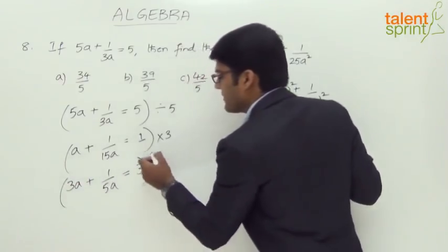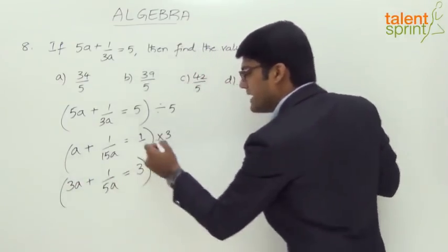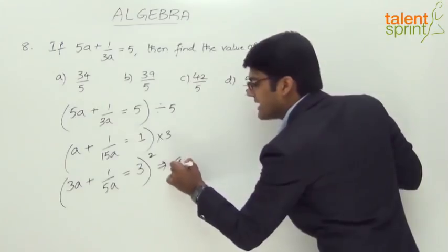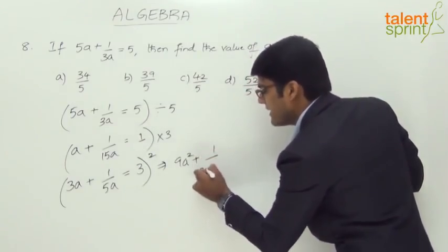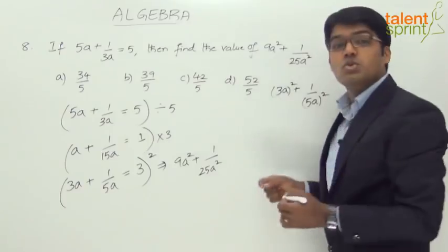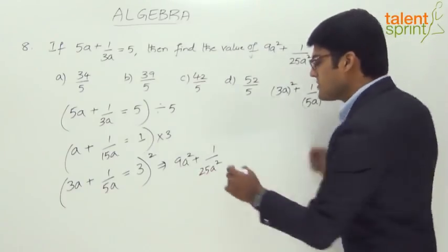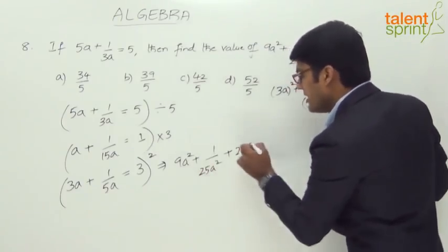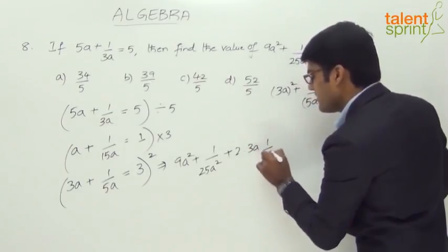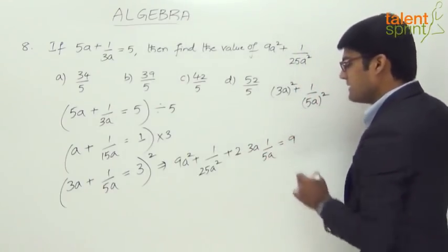So squaring on both the sides, whole square. So what do we get? 3a square, what do we get? 3a square is 9a square plus 1 by 5a square, 1 by 25a square, plus 2ab. a square plus b square plus 2ab. So plus 2 into a is 3a into b is 1 by 5a equals to 3 square, 9.